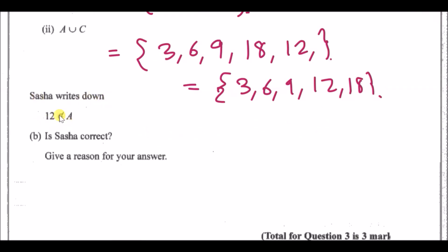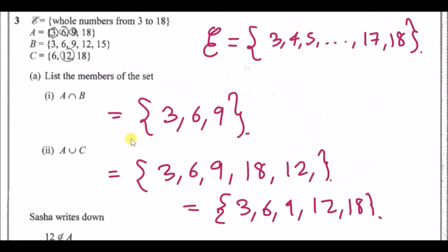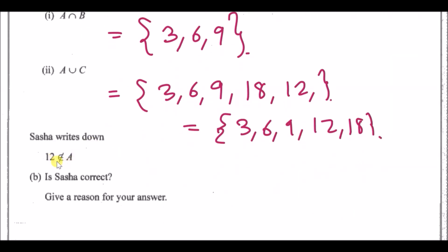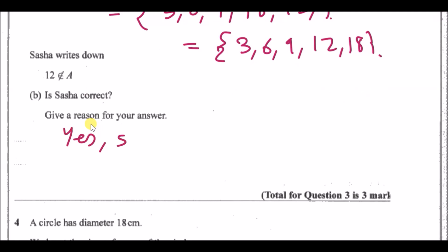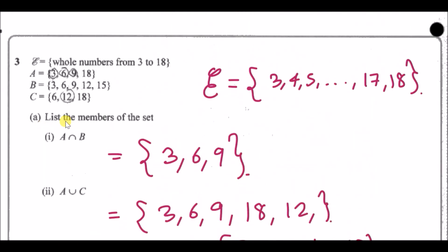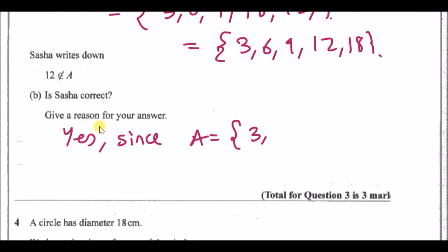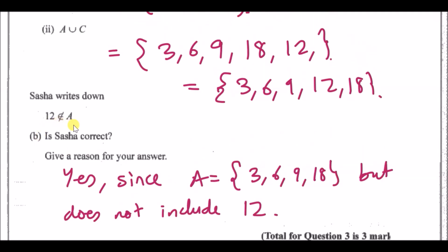Sasha writes down that 12 does not belong in A. Is Sasha correct? Let's look at set A. A has 3, 6, 9, and 18. 12 is not in there which is true, so the answer is yes, since A contains 3, 6, 9, and 18 but does not include 12.